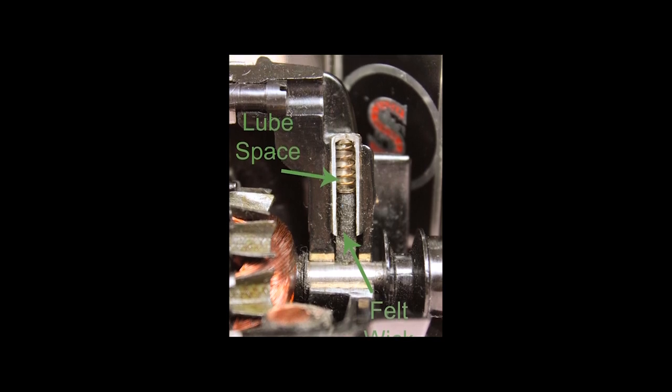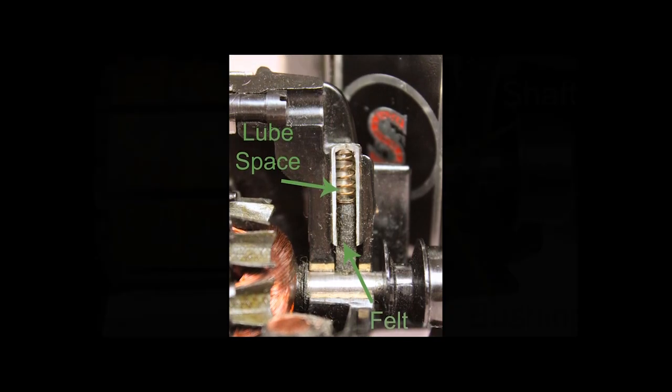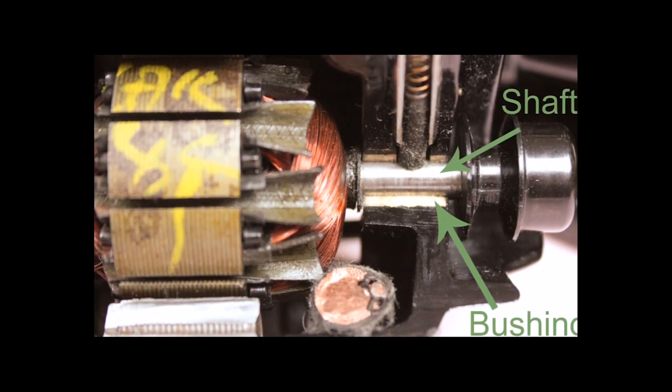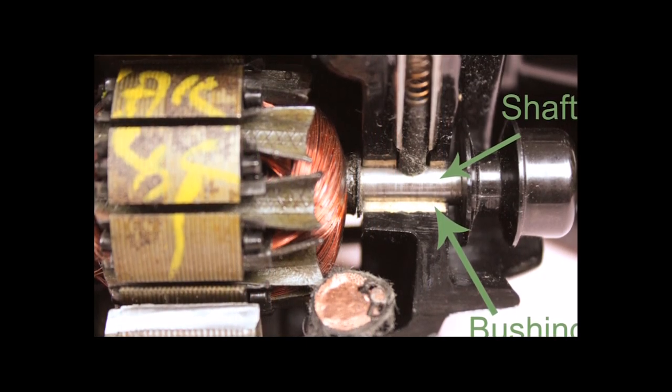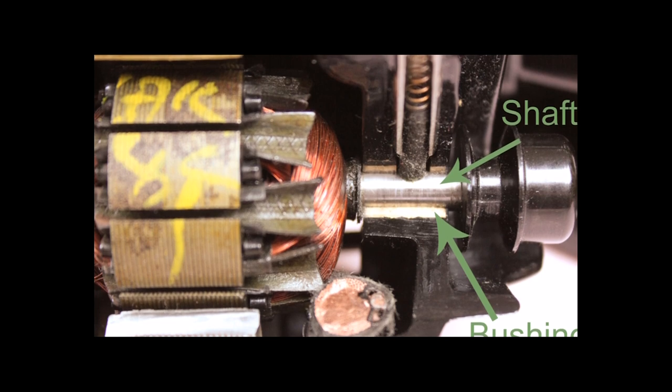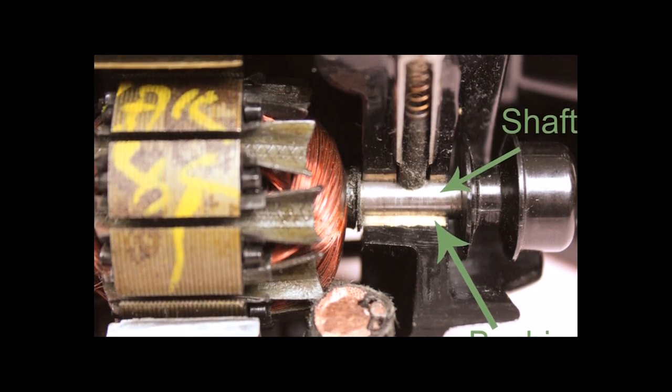When the motor is in use, there is a small amount of heat that is generated, partially from the friction between the shaft and the bushing, and this heat causes the low melting point lubricant to liquefy, thus wicking through the felt and onto the shaft of the motor.